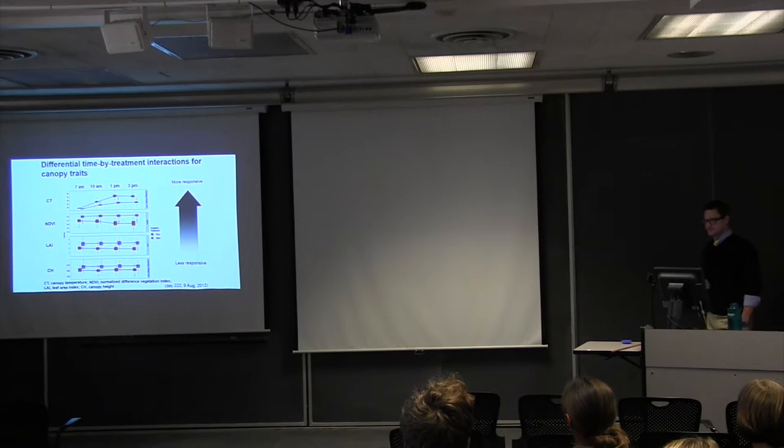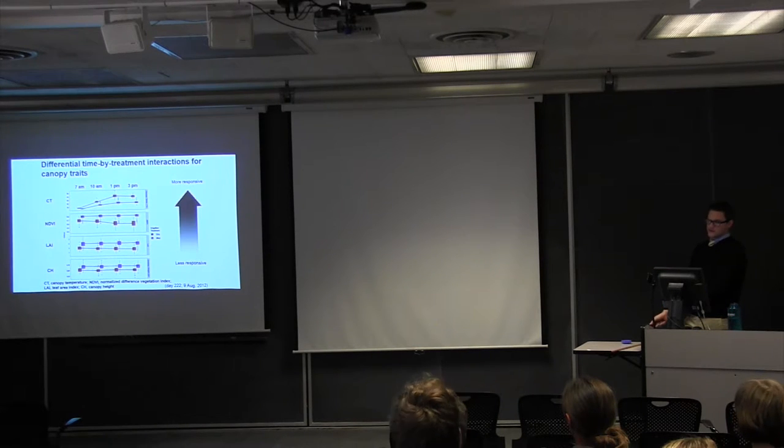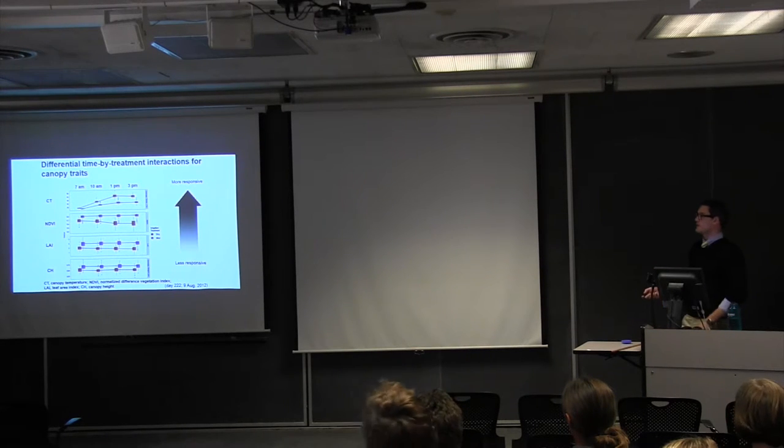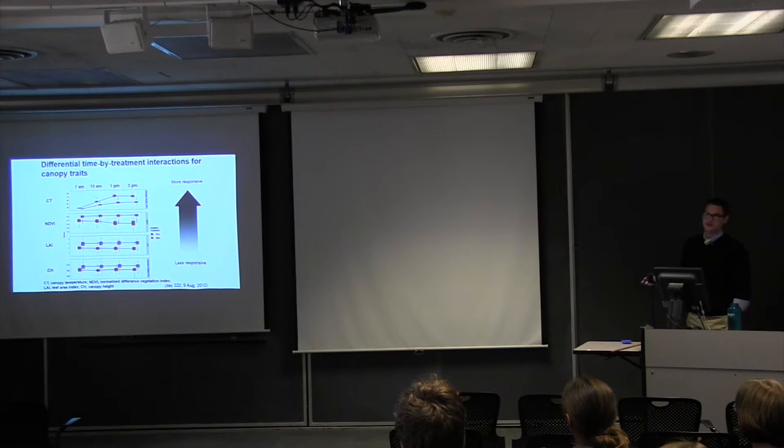But what's really cool and what really has not been done before is measuring this in terms of time. And so here we have four time points across the day, 7, 10, 1, and 3 p.m. And we can see there's a range of responses in terms of the actual canopy traits. So down here for canopy temperature, excuse me, canopy height, it responds pretty much just like you would think. The plants don't get taller or shrink over the course of the day. The difference you see is due to irrigation treatments, which makes sense that stressed plants just aren't as fit as the ones that have access to water.